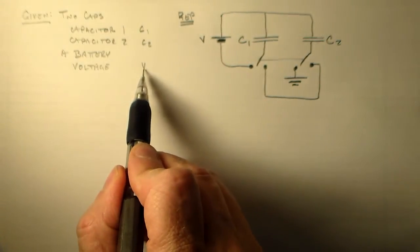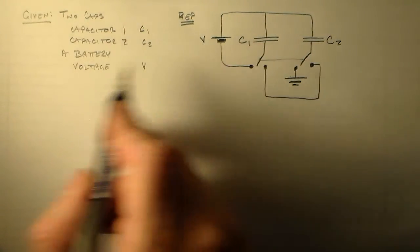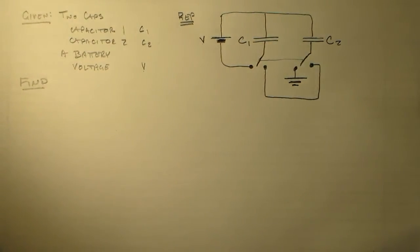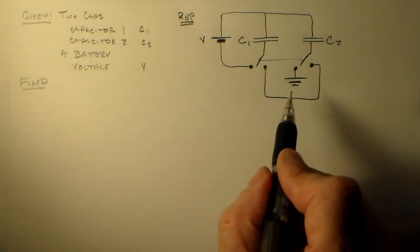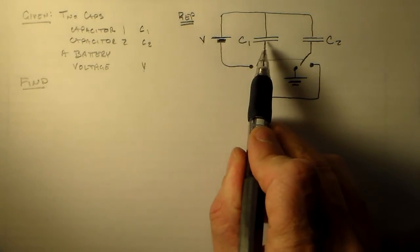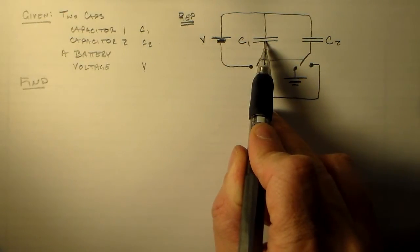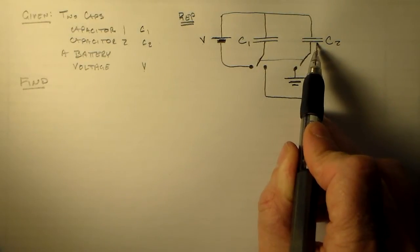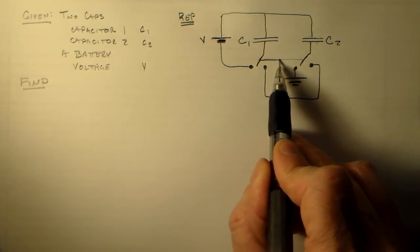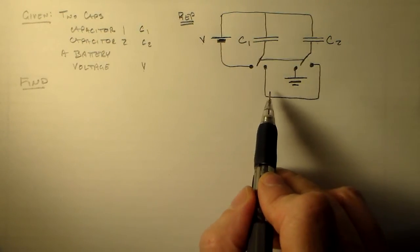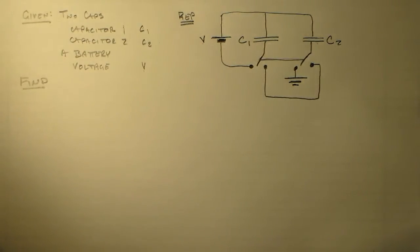So we're given two capacitors, C1, C2, and some battery with a voltage V here. And we've got these two situations. What we're going to want to find here is the charge, the final charge. If we've let C1 completely charge, and C2 completely discharge, and then switch these two connected switches to connect both of these capacitors, what will the final equilibrium charges be.